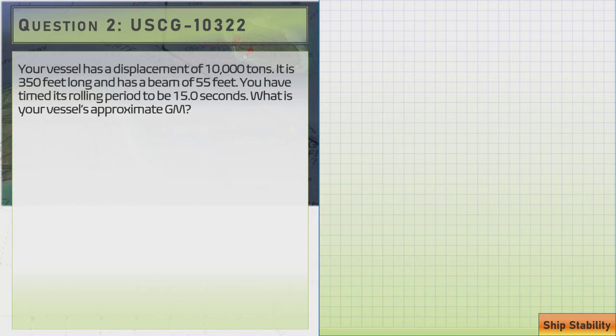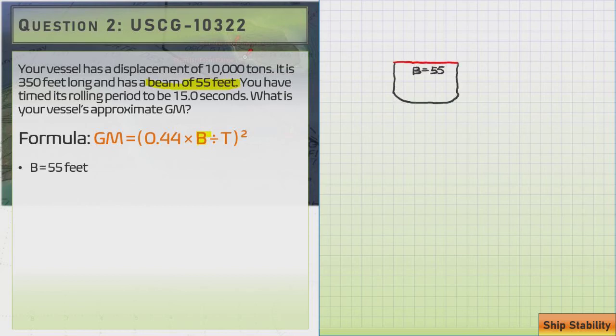Again we're going to use our formula and we're going to be looking for the beam, which is here: beam of 55 feet. So we have 55 for our beam. And we're going to be looking for our second variable T, which is our rolling period, 15 seconds is the answer for that one. So T equals 15, that's our rolling period from side to side back to the other side.